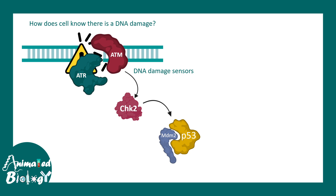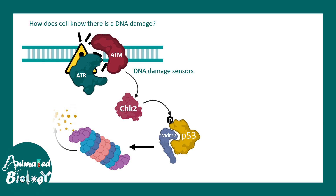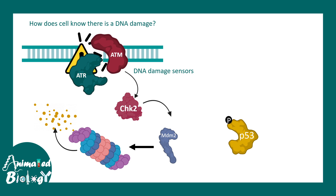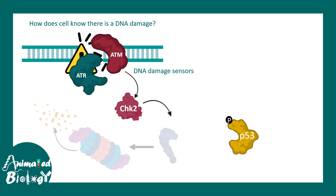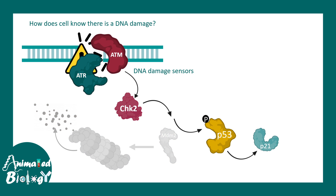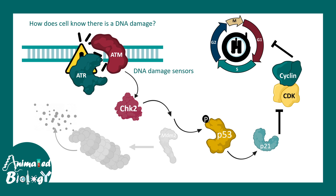The cell senses DNA damage with specific sensors like ATM and ATR, which are kinase molecules that phosphorylate downstream targets such as CHK2 and CHK1 kinase. CHK2 kinase phosphorylates p53, which is a tumor suppressor protein whose inherent goal is to suppress the cell cycle. Phosphorylated p53 is free and cannot be degraded. Normally, MDM2 degrades p53 via the ubiquitin-proteasome pathway, but when DNA damage occurs, p53 is protected. p53 then activates p21, a cyclin-dependent kinase inhibitor, which inhibits cyclin-CDK complexes, pausing cell cycle progression from G1 to S.